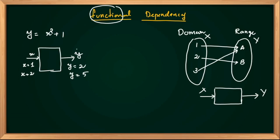So if you know the value of x, it determines y. Here we have X with value 1, Y with value A. X with value 2, Y with value B. X with value 3, Y with value A. Always X determines Y uniquely. A function always has a unique output. If you have X equal to 2, then the output is always 5.